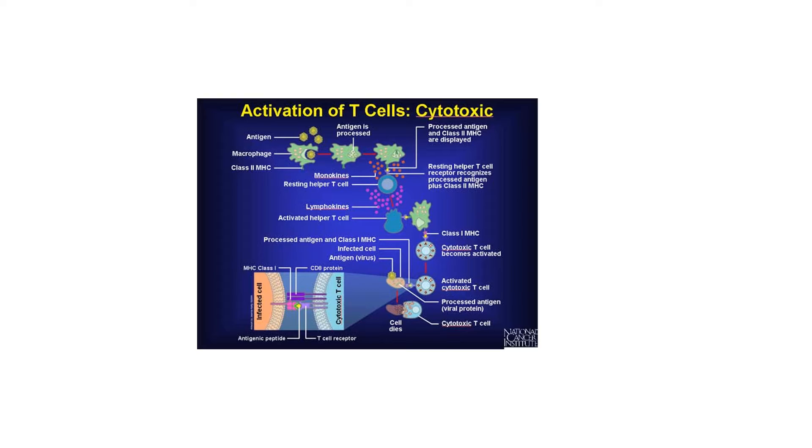They produce cytokines or lymphokines, chemical signals that help activate the cytotoxic T-cell. Let's take a look at that. Here's my activated helper T-cell. This is a T-helper 1 cell producing chemical signals that will help activate this cytotoxic T-cell.